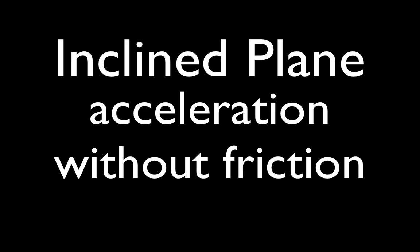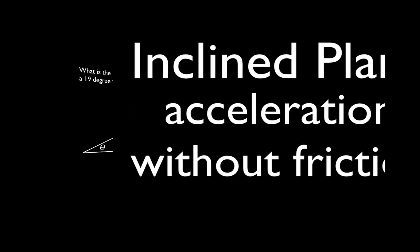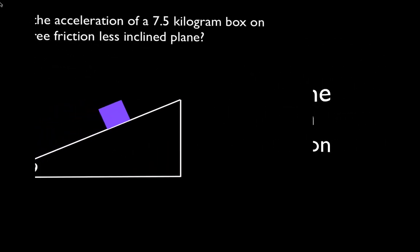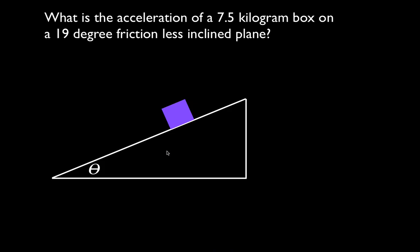We're going to go over how to determine the acceleration of an object sliding down an inclined plane with no friction between the object and the inclined plane. Here is the purple object on the inclined plane. The question is: what is the acceleration of a 7.5 kilogram object as it moves down a 19-degree frictionless inclined plane, inclined above the horizontal at an angle of 19 degrees?